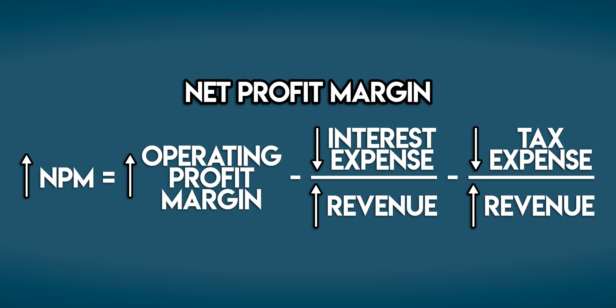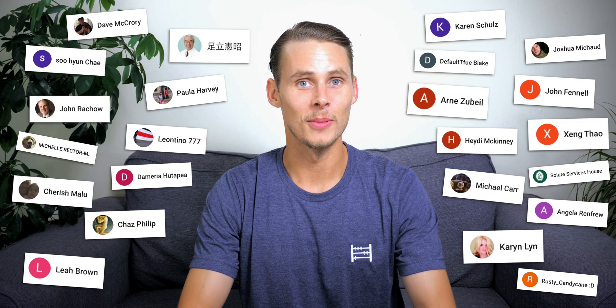What causes an increase in net profit margin? The equation is the same, but we can spin the arrows around. Operating profit margin could have increased, which would flow through and have a direct impact on net profit margin. Alternatively, the business's interest or tax expenses might have dropped as a proportion of revenue earned.